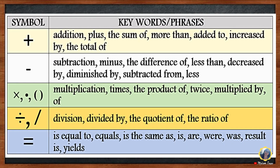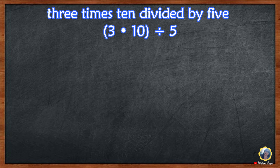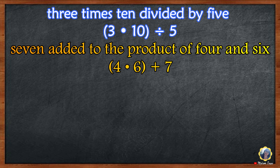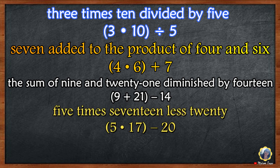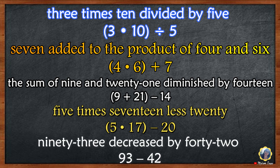Here are keywords used to describe common mathematical operations. Examples include: 9 and 21 diminished by 14; 5 times 17 less 20; and 93 decreased by 42.